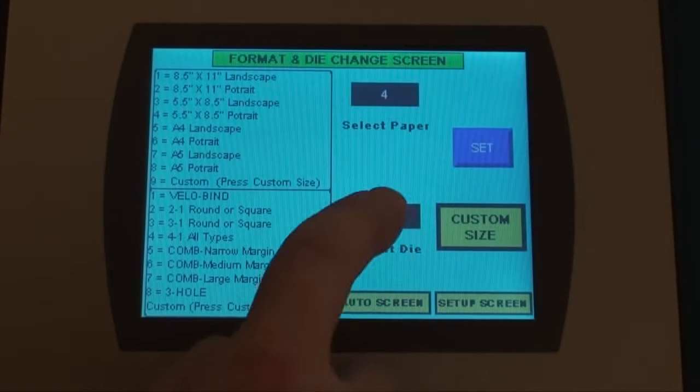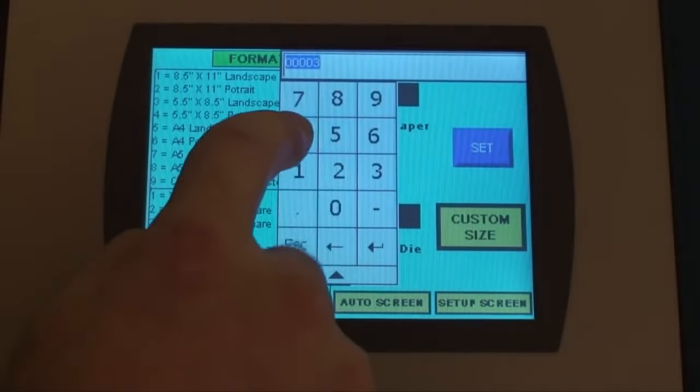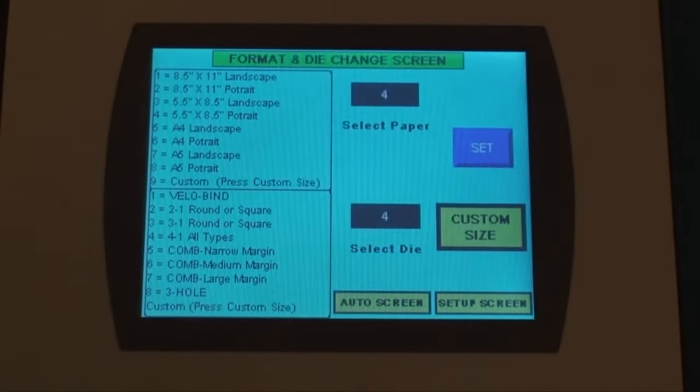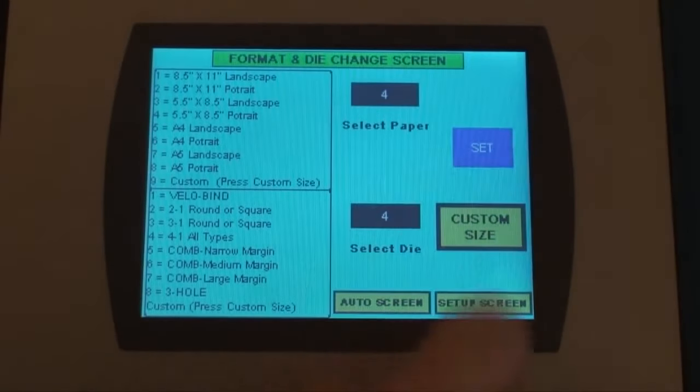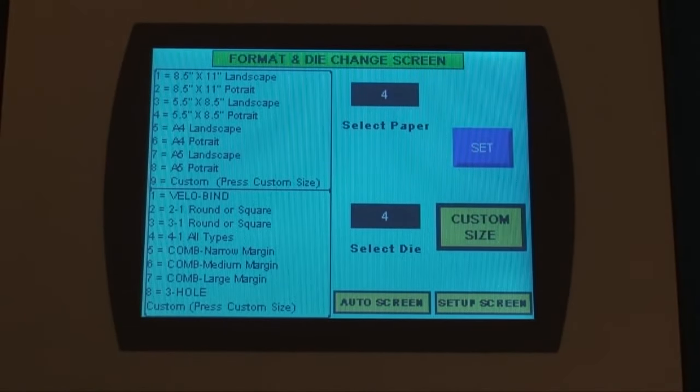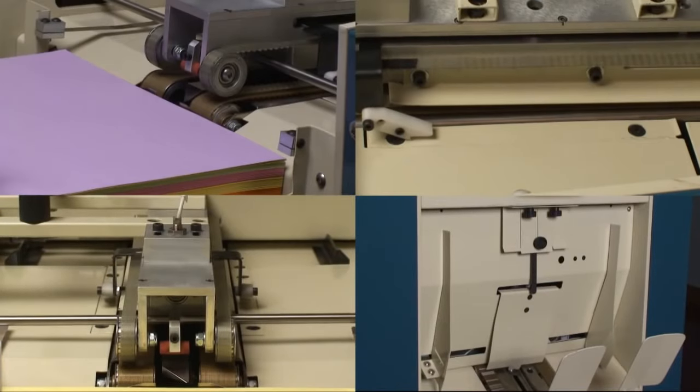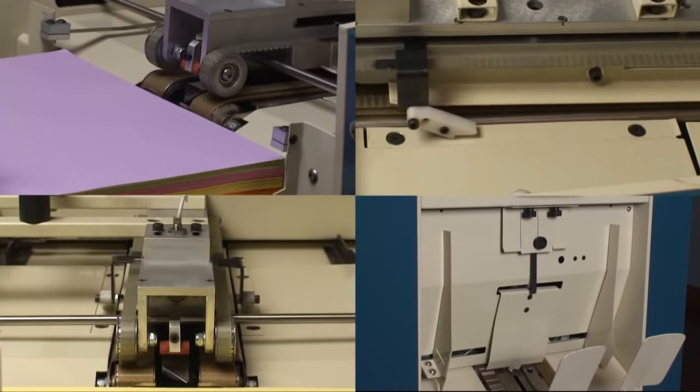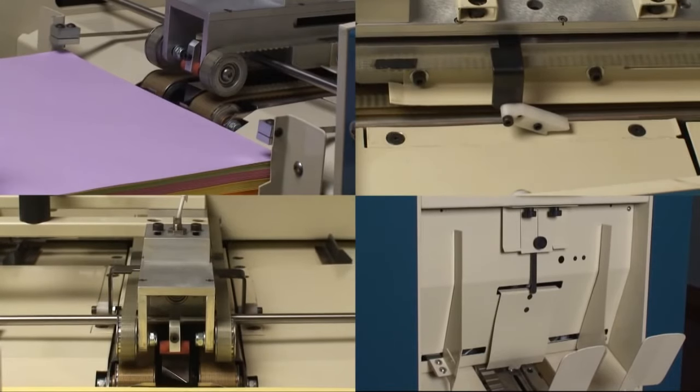The Sterling DigiPunch employs a revolutionary touch screen that automates the setup and changeover process. First, select the paper size from a list of standard sizes or enter your own custom size. This actuates the stops and side guides to move automatically to the desired position.